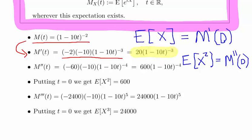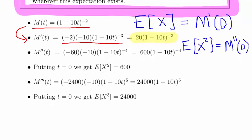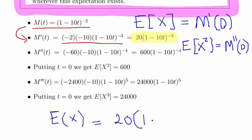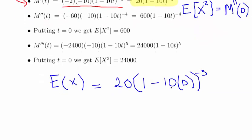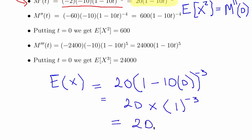This first derivative is not directly asked for, but evaluating it at t = 0 gives us E[X]. That is 20 times (1 minus 0) to the minus 3, which is 20 times 1, so E[X] = 20.